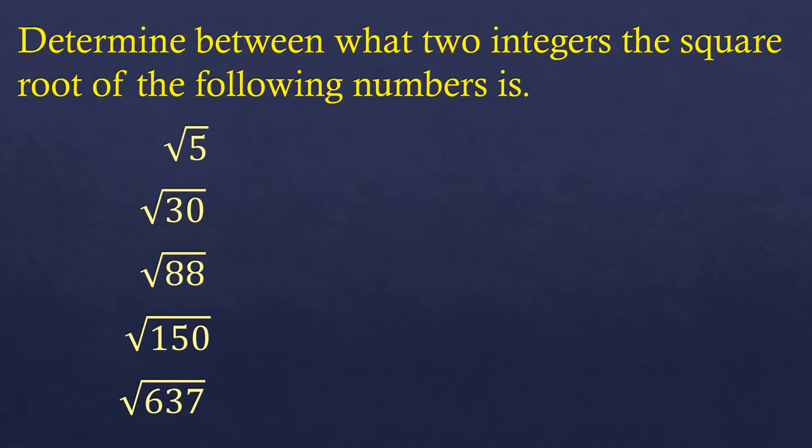We have the square root of 5, square root of 30, square root of 88, square root of 150, and square root of 637. All of this will result in an irrational root, but we are not after the exact value of the roots. We want to know where it falls between what two integers.